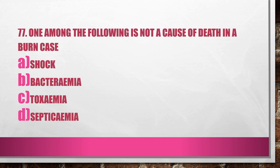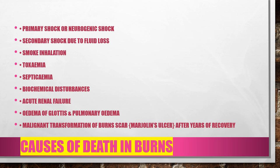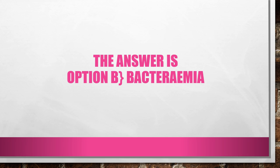Question No. 77. One among the following is not a cause of death in a burn case: A. Shock, B. Bacteremia, C. Toxemia, D. Septicemia. The causes of death in burns are primary shock or neurogenic shock, secondary shock due to fluid loss, smoke inhalation, toxemia, septicemia, biochemical disturbances, acute renal failure, edema and pulmonary edema, malignant transformation of burn scar i.e. Marjolin's ulcer after years of recovery. So the answer is Option B, Bacteremia.